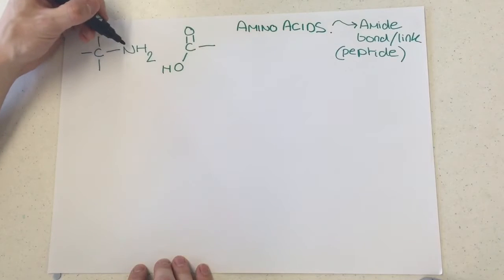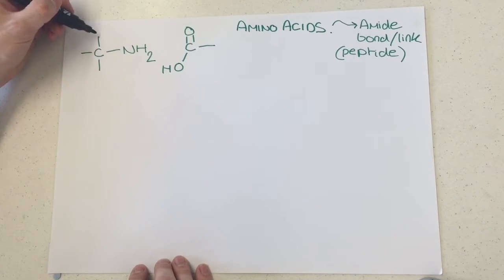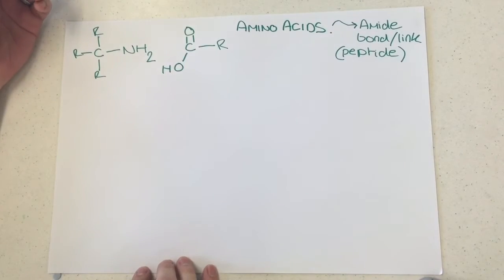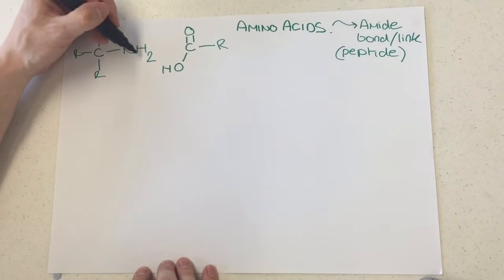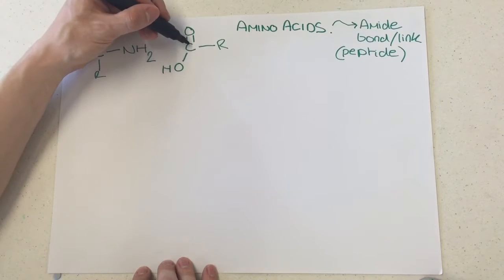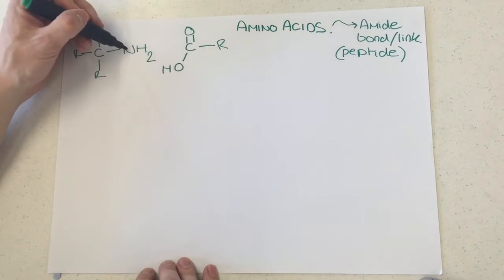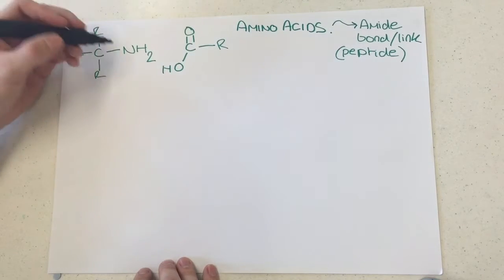Now specifically we have to concentrate on these two functional groups. I could list through the R groups all the way around here, but it doesn't matter too much. All I'm trying to draw your attention to is we have an NH2 and we have a COOH, and we're going to form a bond between the nitrogen and the carbon, which is formed in a condensation reaction.